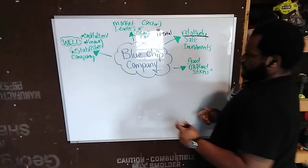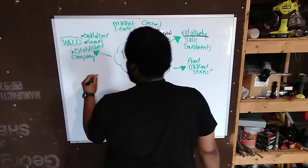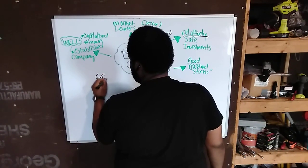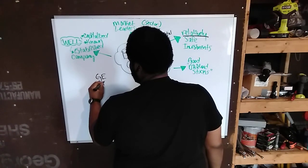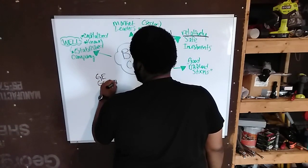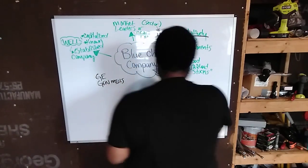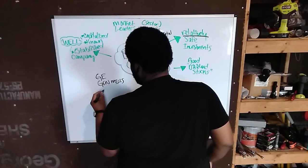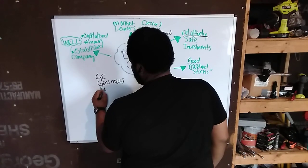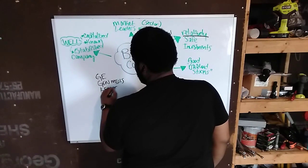Blue chip companies include, of course, GE, General Mills which owns all your cereal, you can even put Kellogg in there, Coca-Cola.